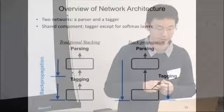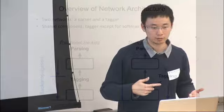In traditional stacking, the parser and tagger networks are typically independent — training signal from parsing doesn't backpropagate into the tagger network. In our model, the parsing training signal also backpropagates into the tagger network because the tagger's hidden layer is shared by the parser, and we jointly train both networks. The tagger network thus takes information from both parsing and tagging training examples. The structure looks similar to a multitask network, but it becomes more complex after unrolling the parser transitions.